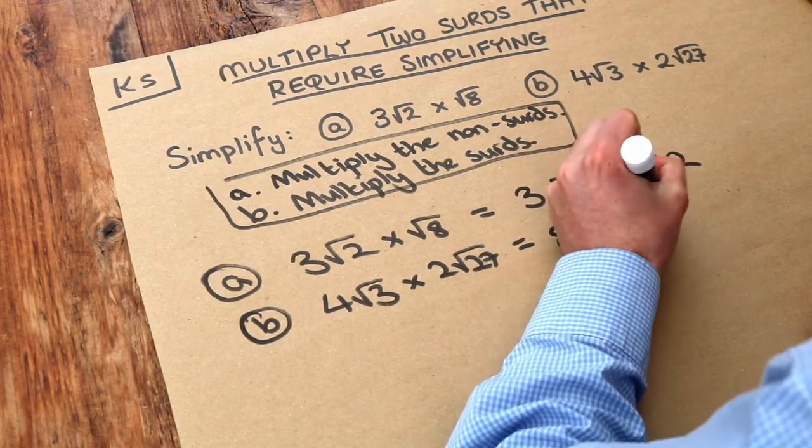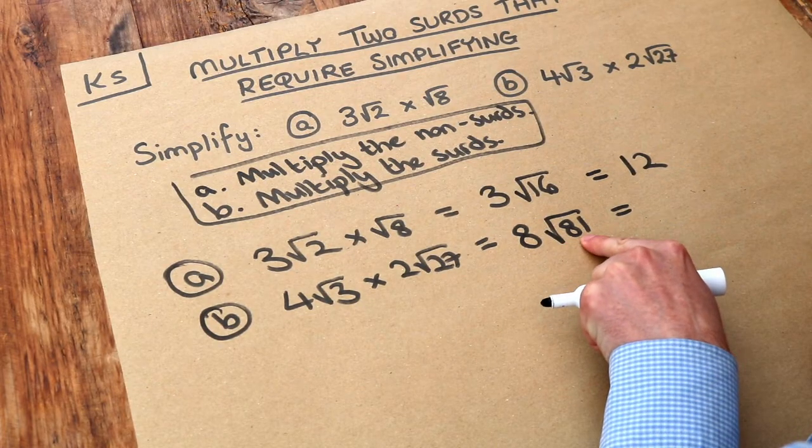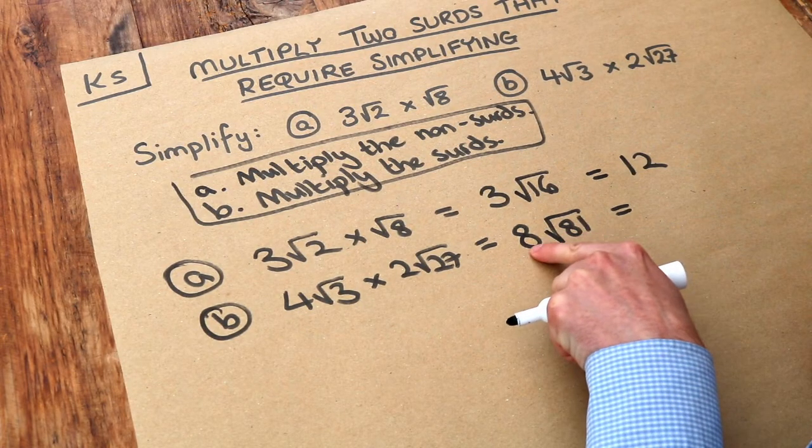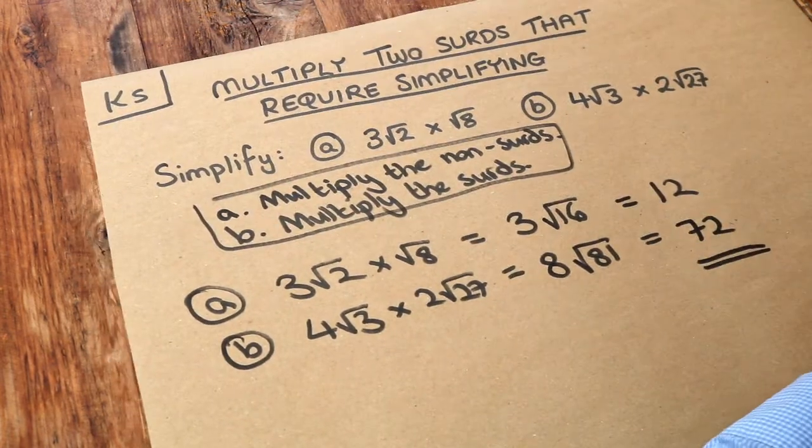And again we've conveniently ended up with a square number here. Eighty-one is a square number and the square root of eighty-one is nine. So we have eight times by nine is seventy-two, and again that is the final answer.